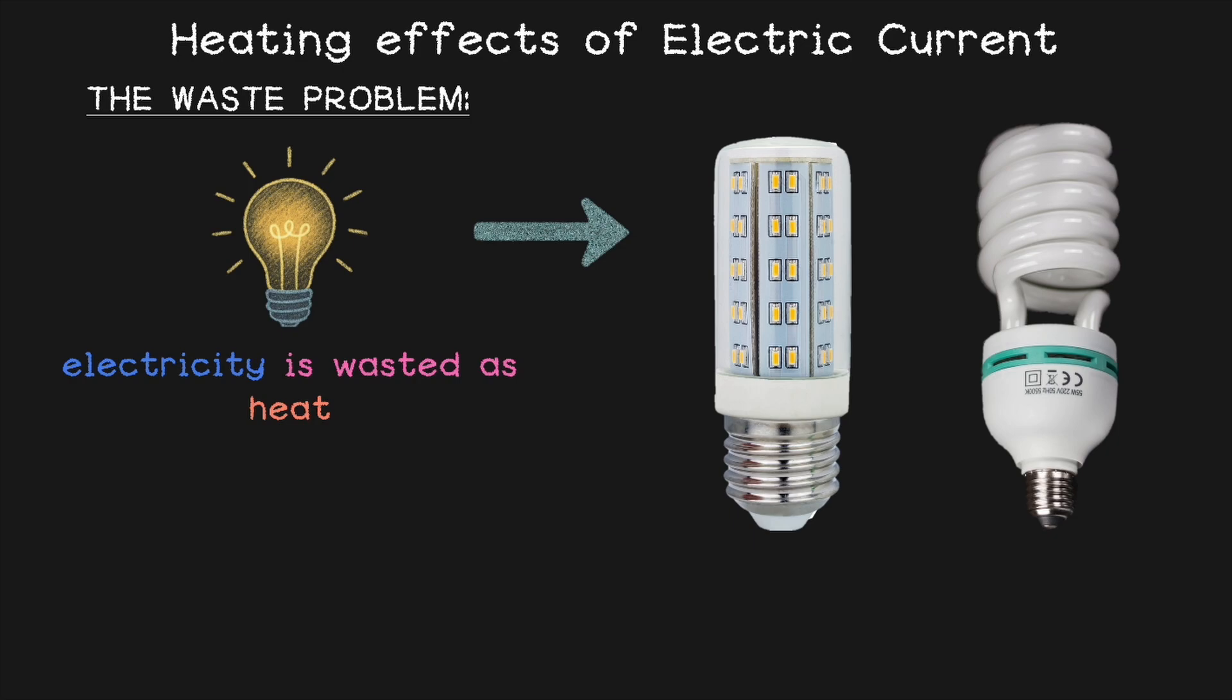Well, there are already two inventions existing for it. One is light emitting diode bulbs or you would rather know it as LED bulbs and the compact fluorescent lamp which is CFLs. They give the same amount of light using less electricity which waste less heat. Among these two, nowadays LEDs are preferred over CFLs because they last longer and use even less electricity compared to CFL. That's why they are better for the environment and of course for your electricity bill.